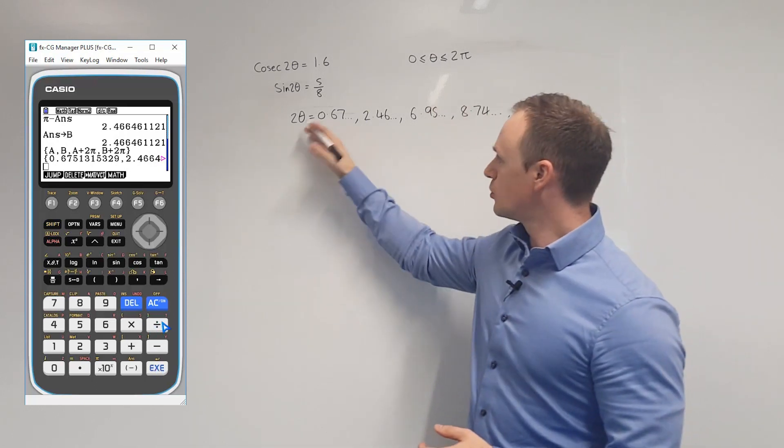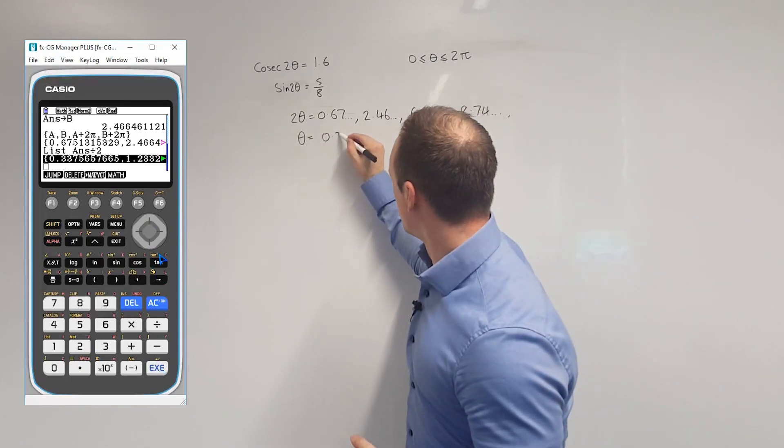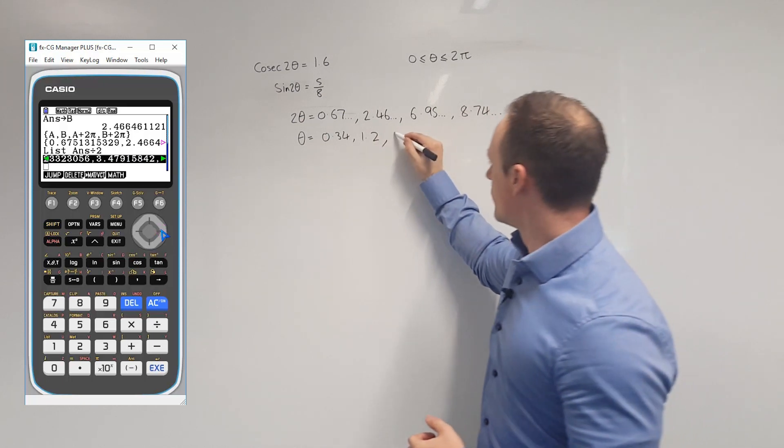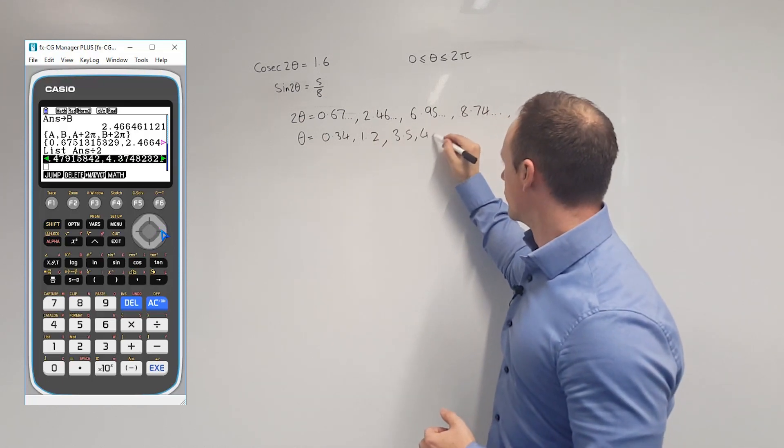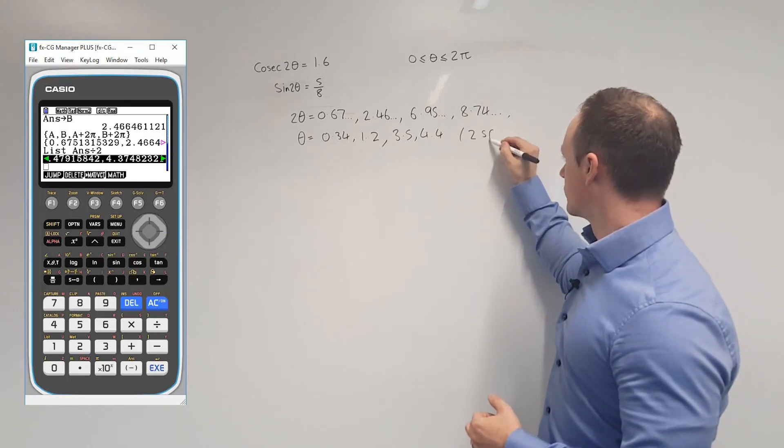Finally, we're going to take all of these solutions here and divide them all by 2. And we're going to get 0.34, 1.2, 3.5, and 4.4. Each of these is to two significant figures.